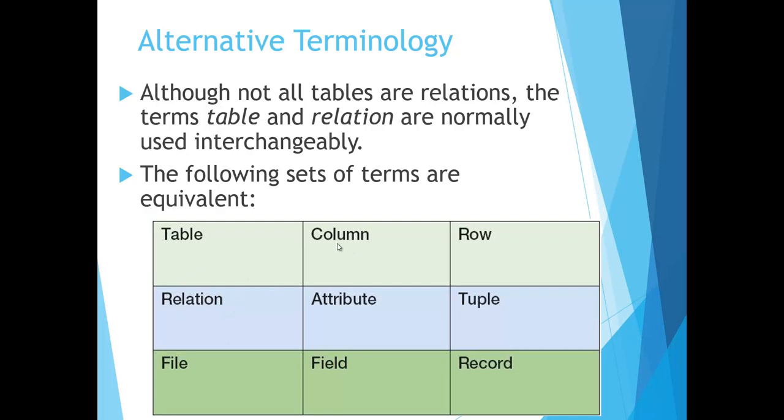Also, they use the term column, attribute, or field. Any of those are considered the same, and they represent the same term or the same thing in a database. The same for row, tuple, and record, the same. So just remember those terms, and remember that all these three mean the same, those three mean the same, and those three mean the same.